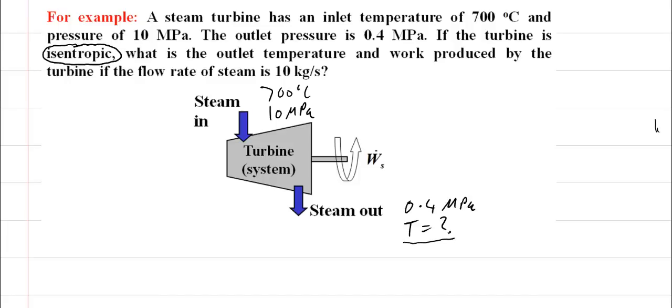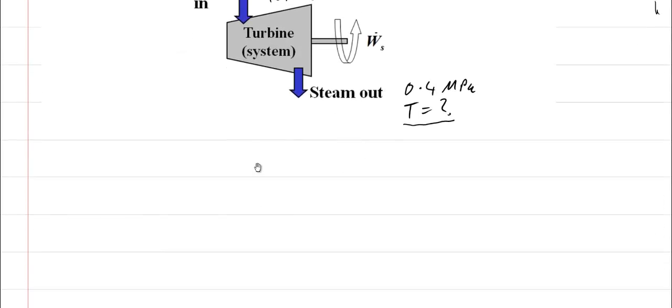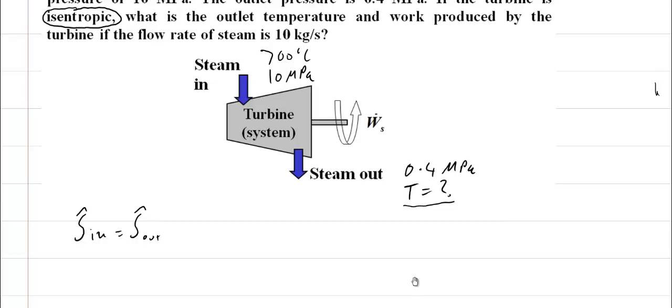For an isentropic system, the entropy in is equal to the entropy out. This fits with our assumptions. We're assuming first it's a steady state, so we're not interested in the dynamic behavior of this system.